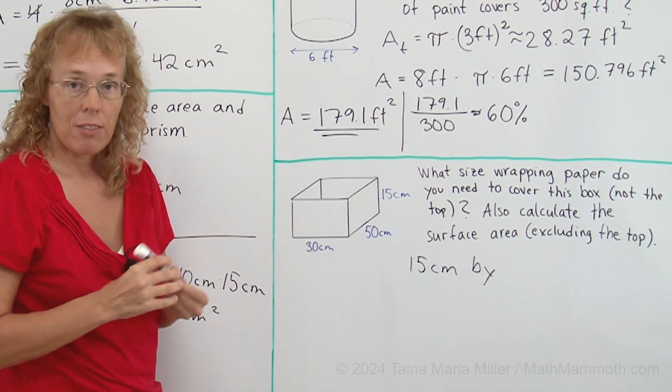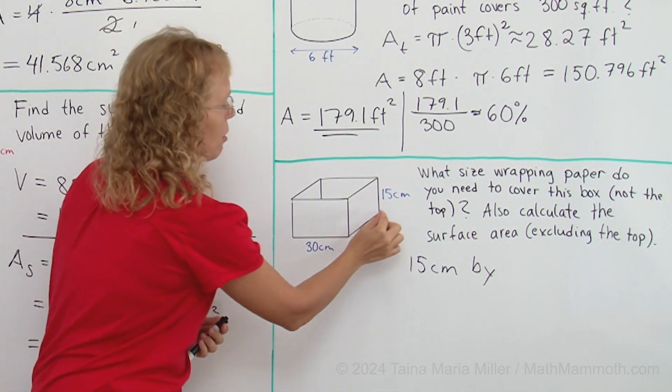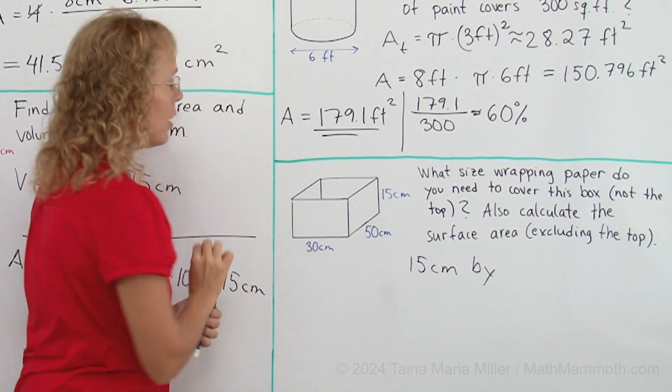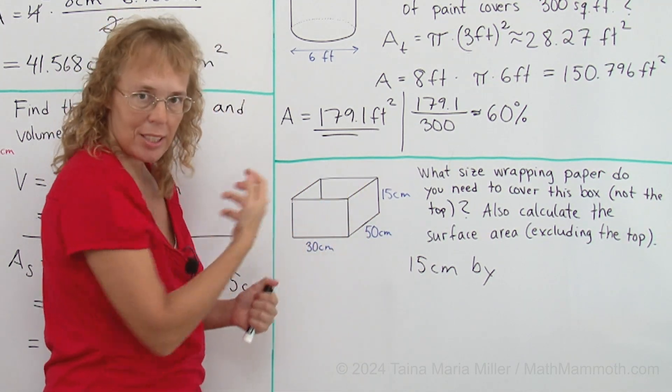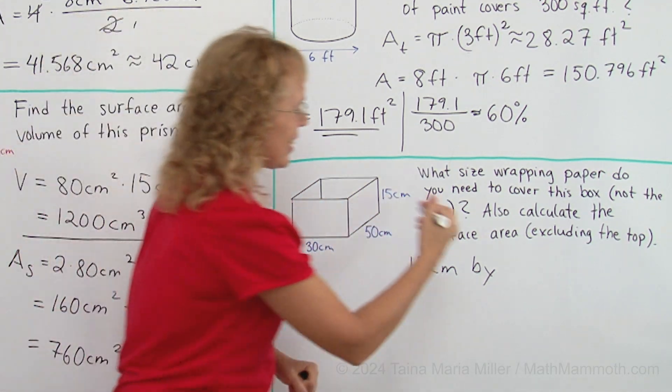And the other side of the rectangle, the long one, has to go around here, here, here, here. So the other side has to be 50 plus 30 plus 50 plus 30 or 160 centimeters.